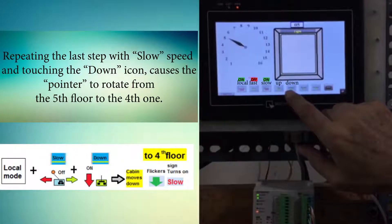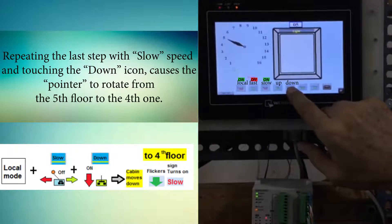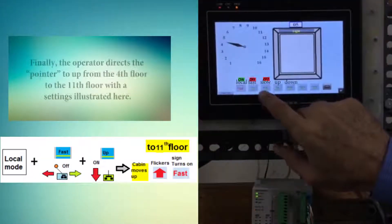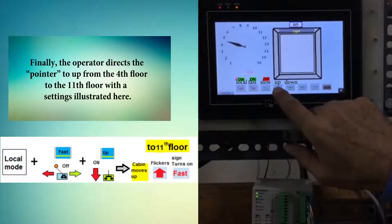Repeating the last step with slow speed and touching the down icon causes the pointer to rotate from the fifth floor to the fourth one. Finally, the operator directs the pointer up from the fourth floor to the 11th floor with the settings illustrated.